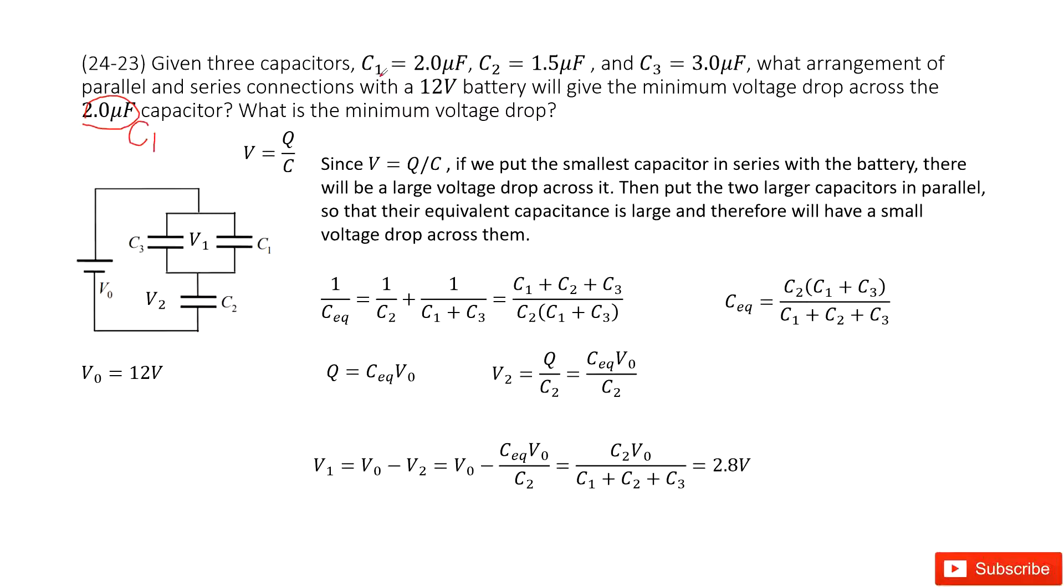We consider for capacitor C1, if we want to make the voltage a minimum, that means we must make the equivalent capacitance maximum. Because it asks for minimum voltage, the C must be maximum, since the charge we couldn't change. That means in this connection, we need to make the equivalent capacitance for C1 maximum.